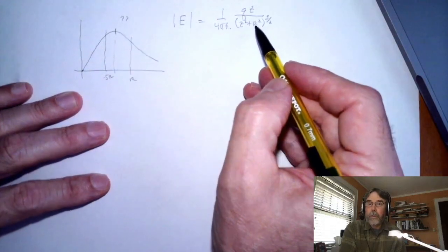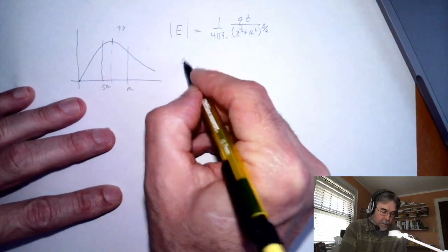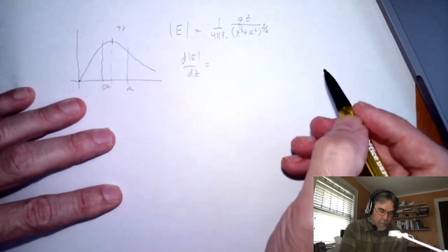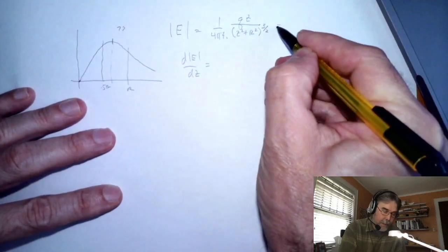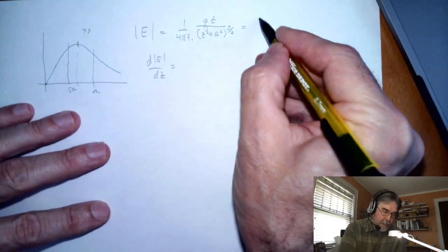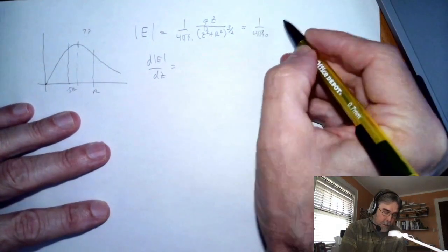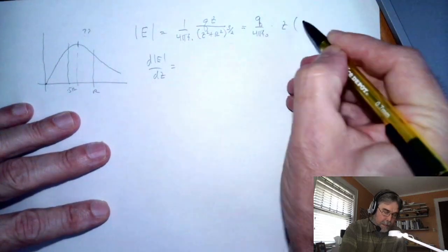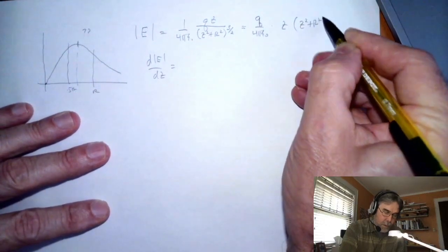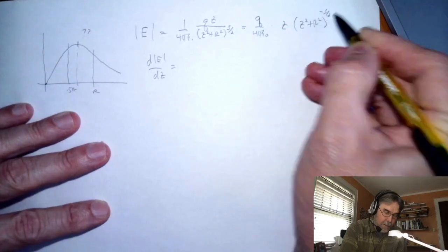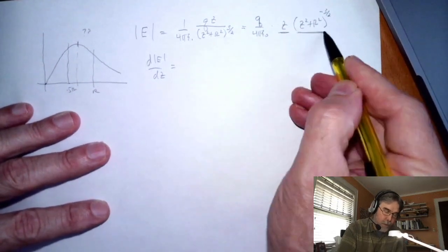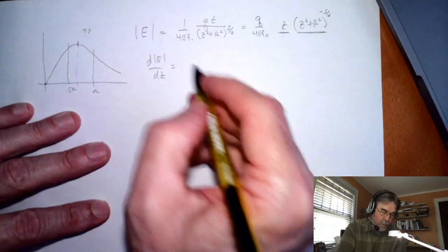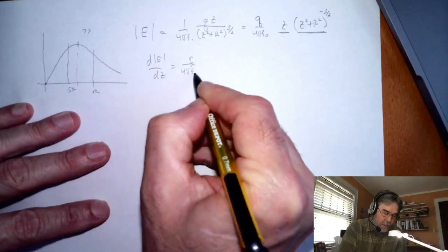Okay so let's go ahead and calculate the derivative of the magnitude of E with respect to z. Now one way to make that easier is to rewrite this. Let's think of this as 1 over 4πε₀ and then I've got a q here and then it's z and I'm going to write it as z squared plus r squared to the negative 3 halves and that way I can use the product rule. I can think of this as two factors and I can use the product rule to evaluate the derivative with those two factors.